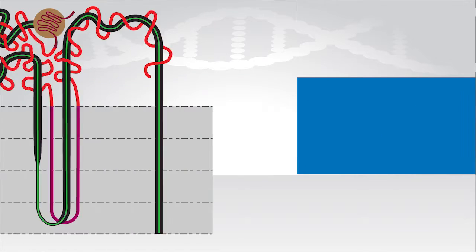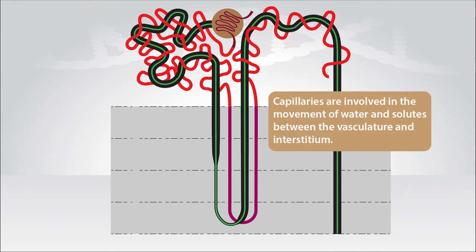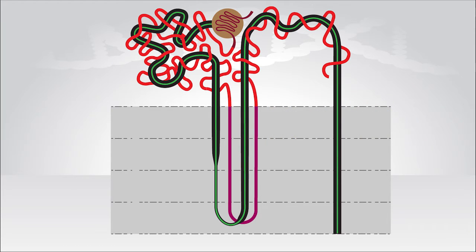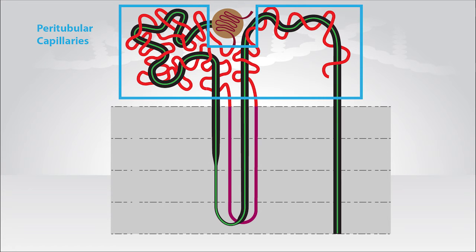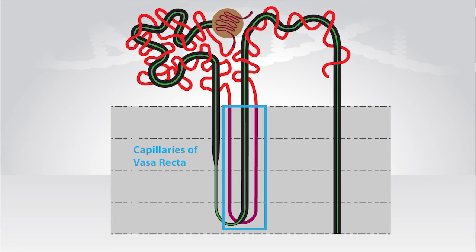Well first off, we know that capillaries are involved in the movement of water and solutes between the vasculature and interstitium. So with that in mind, let's review the relevant capillary networks within the kidney: the glomerular capillary network, the peritubular capillaries, and the capillaries that make up the vasa recta.